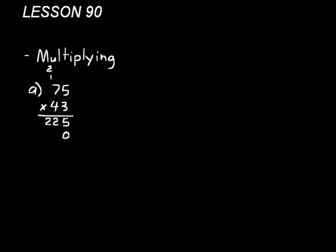4 times 7, we do that next. That's 28. Add the 2 on there, that would be 30. Now, remember we're doing 75 times 40, not just 75 times 4. So we need to add a 0. 3,000.